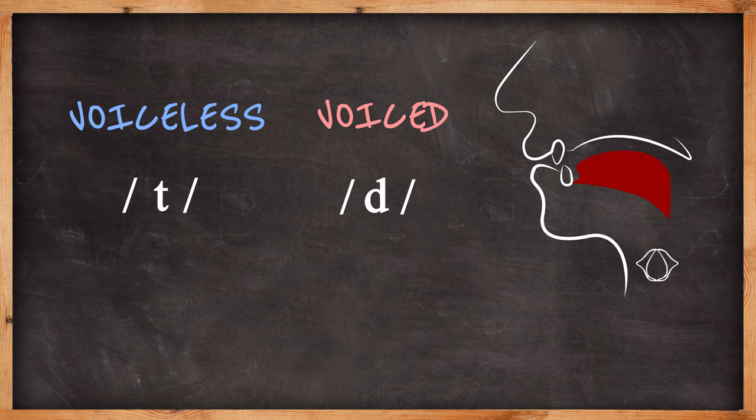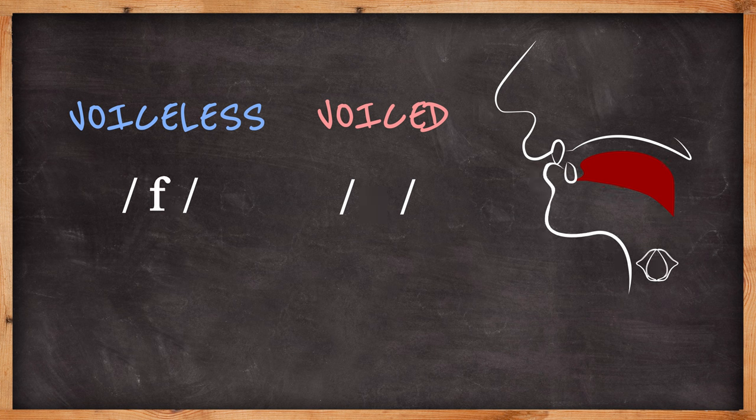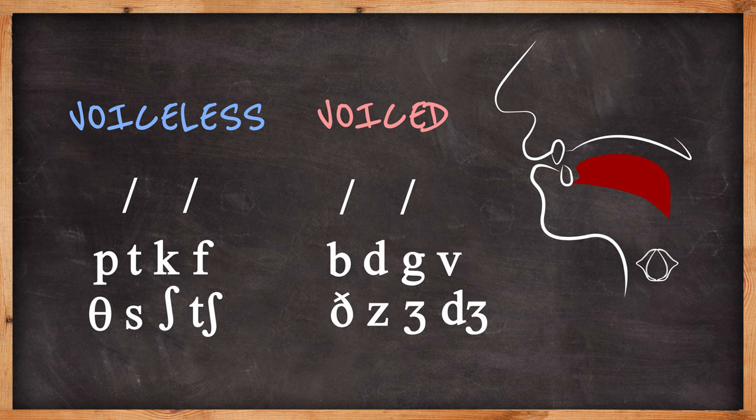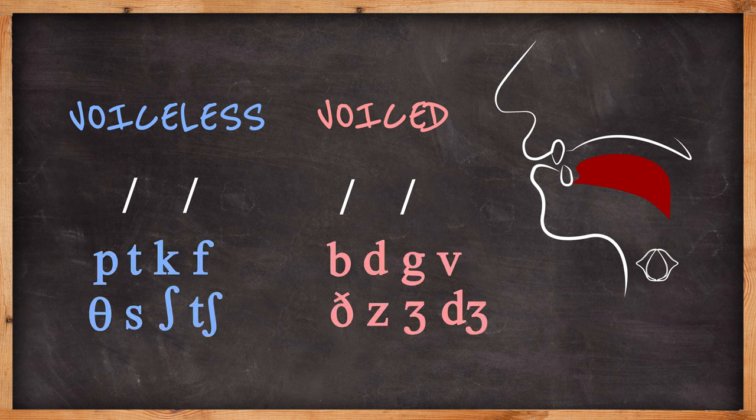T, d, k, g, f, v, th, th, s, z, sh, j, ch, j. So you can see in each of these pairs, the mouth position was the same, but the first one was voiceless and the second made with voice.